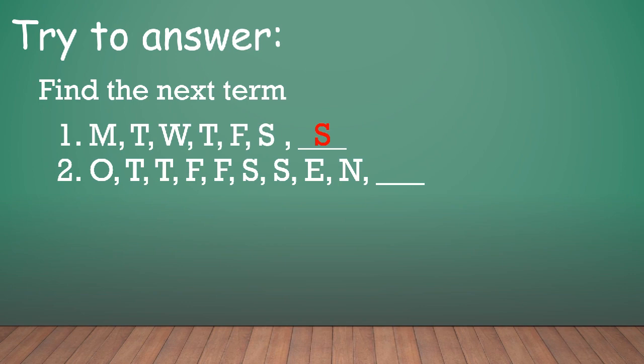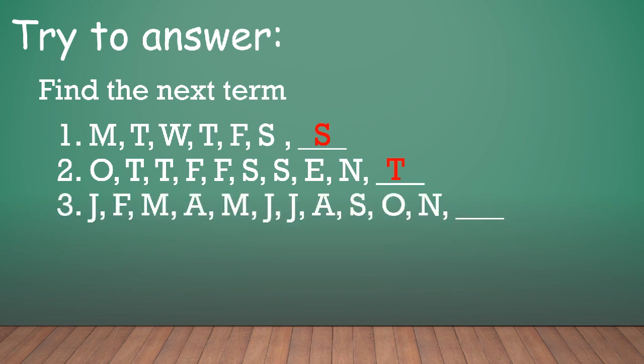Number 2: O, T, T, F, F, S, S, E, N. What will be the next letter? Letter T. So these are actually the first letter of the names of numbers: 1, 2, 3, 4, 5, 6, 7, 8, 9, 10. Let's have number 3: J, F, M, A, M, J, J, A, S, O, N. So what will be the next letter?